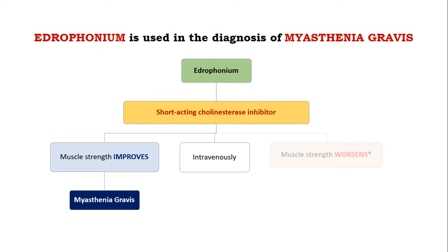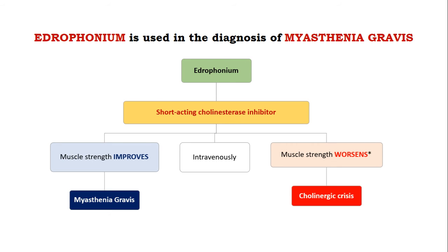If the muscle strength worsens, that indicates that the patient is having a cholinergic crisis — that is, an excess of acetylcholine. In such a condition, you need to stop the edrophonium or any cholinesterase inhibitor being used in that patient.